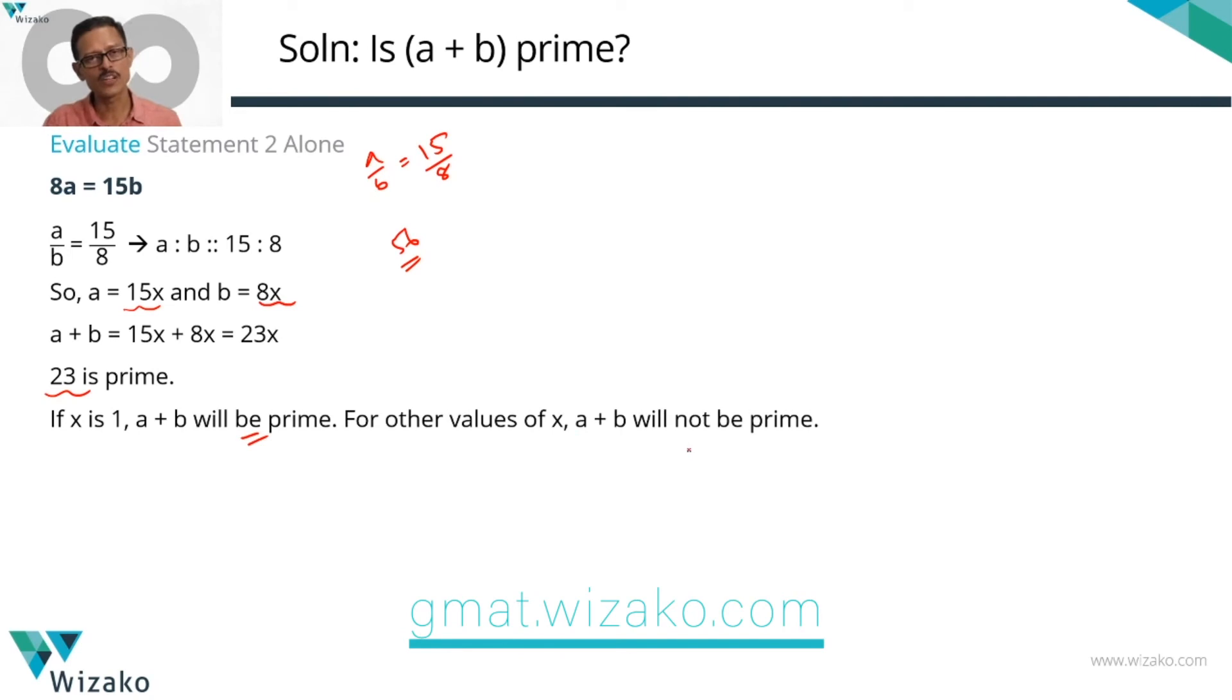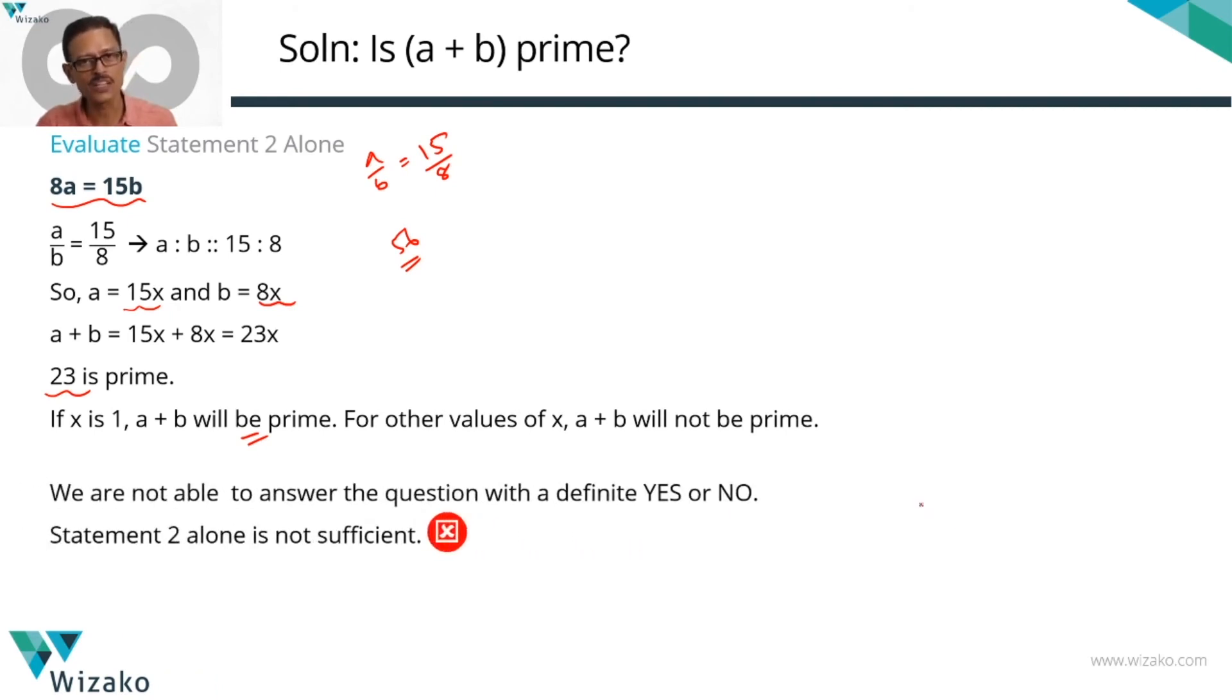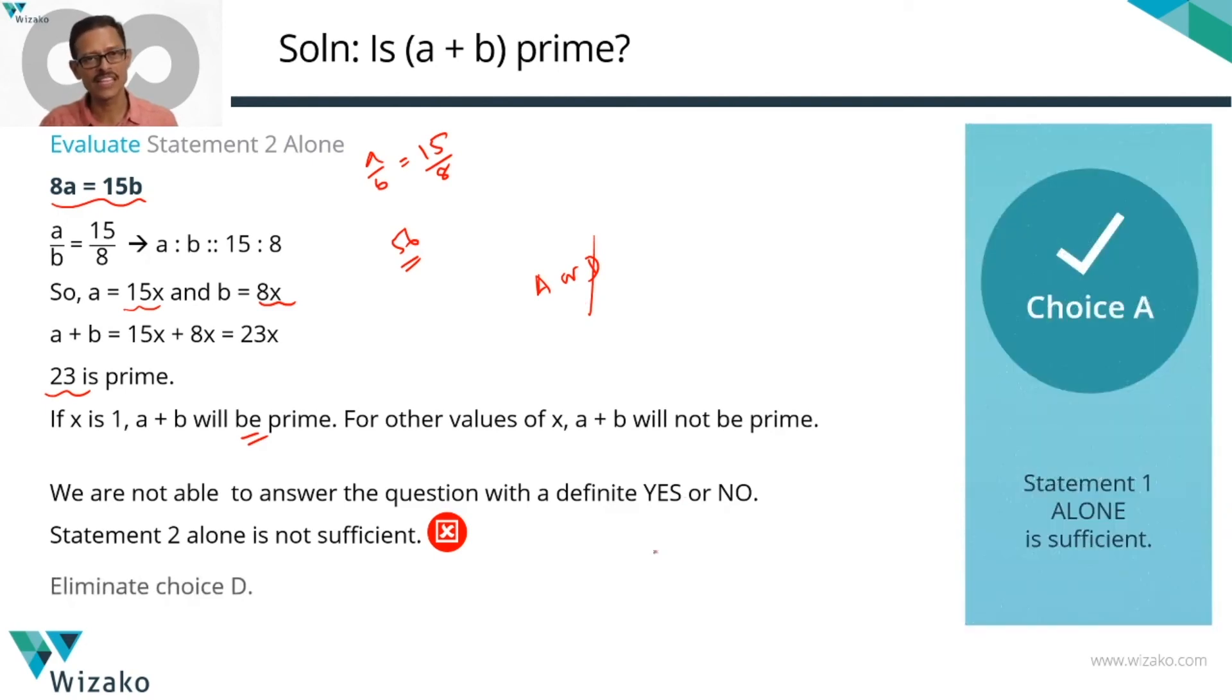Statement two is not giving us a definite answer. Two alone is not sufficient. At the end of evaluating statement one, we were down to A or D. Two is not sufficient, so rule out option D. Choice A is the correct answer to the question.